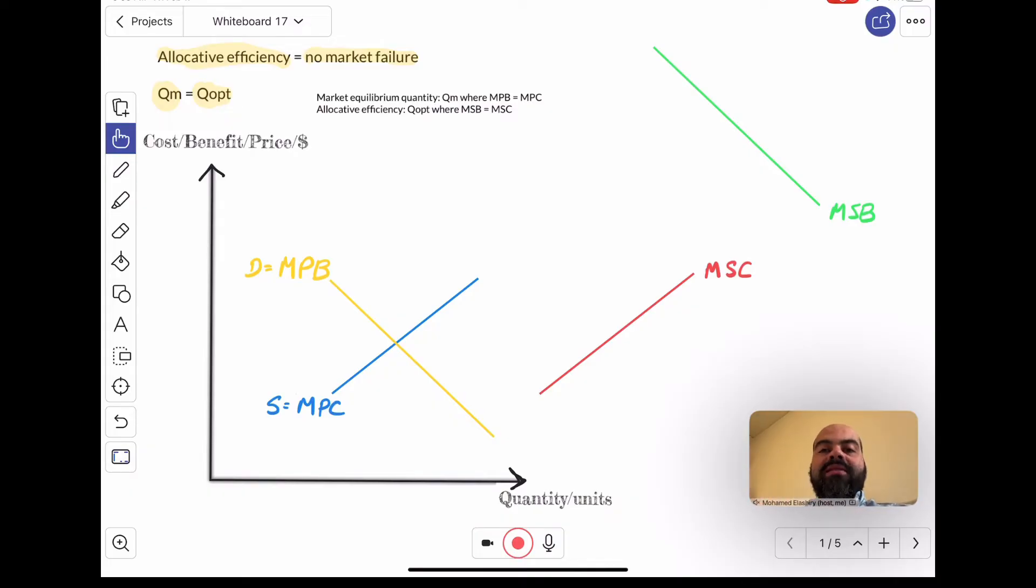This is the market equilibrium. This gives us qm. Now, in the case of no market failure, there are no externalities, so the MPC just happens to also align with the MSC because there are no external costs on the supply side, on the production side. So the MPC and the MSC align, and the MSB and the MPB align.